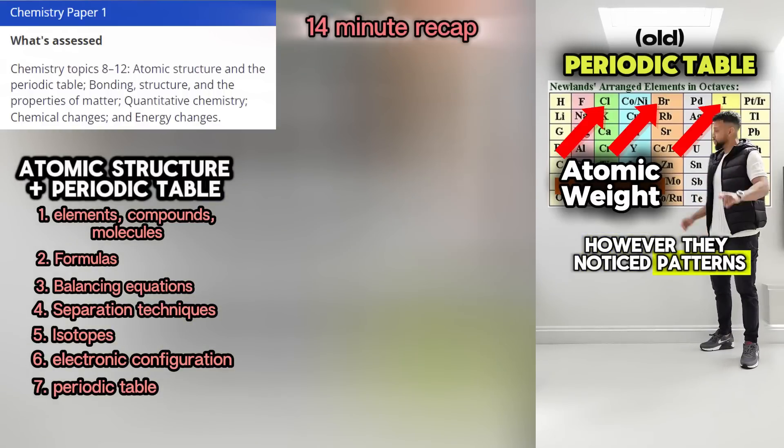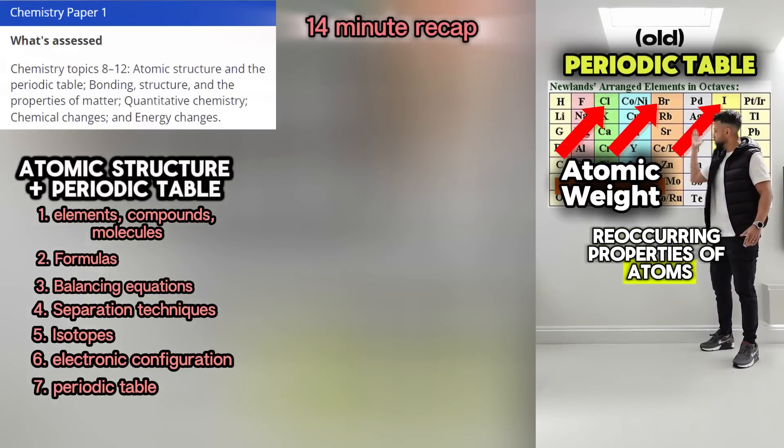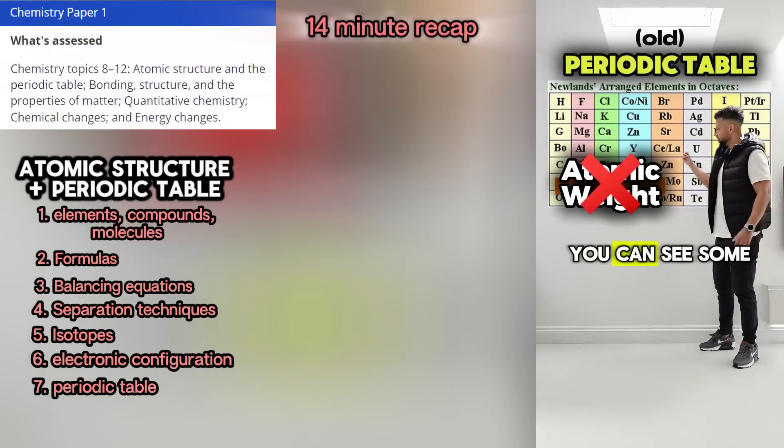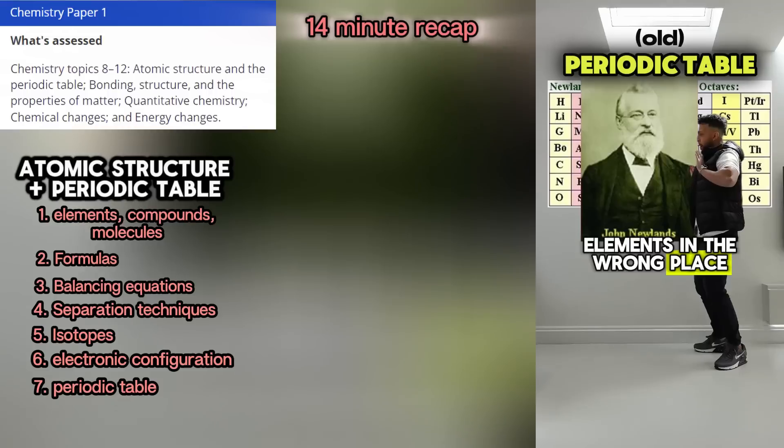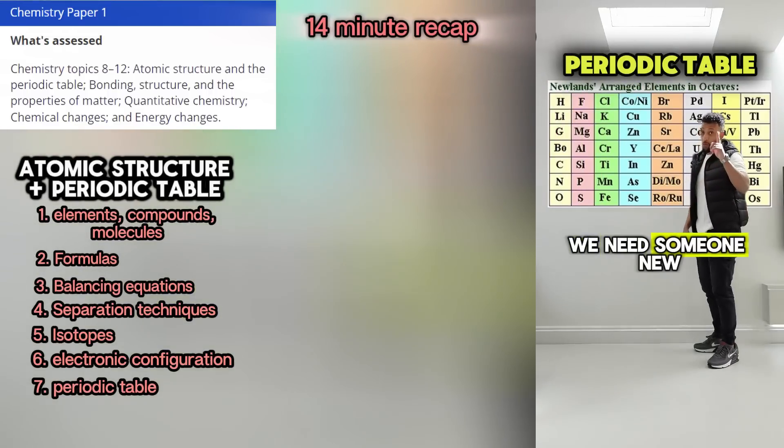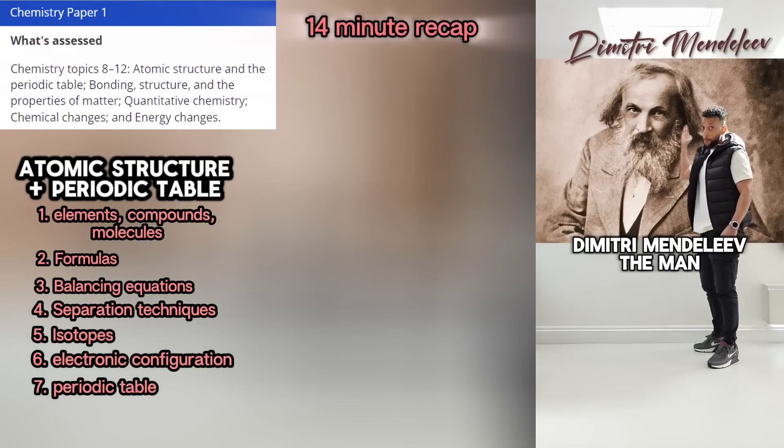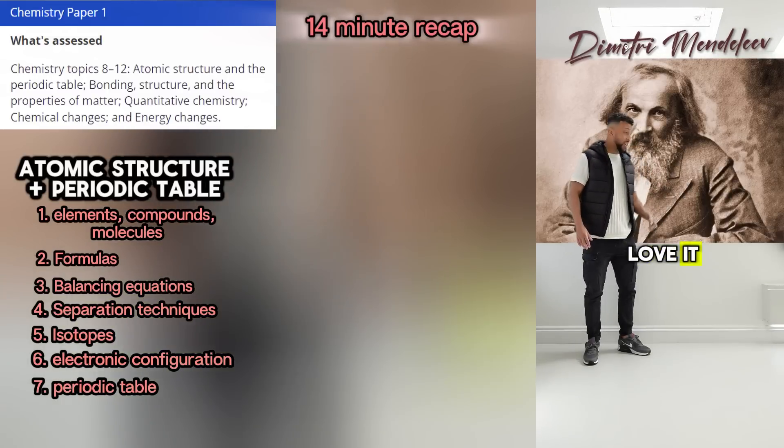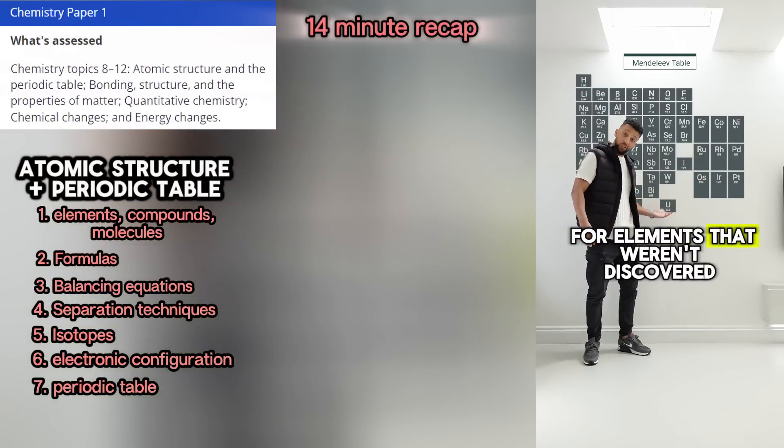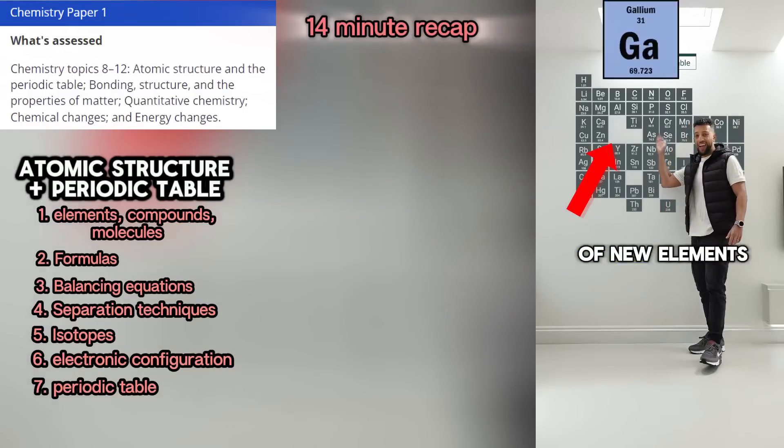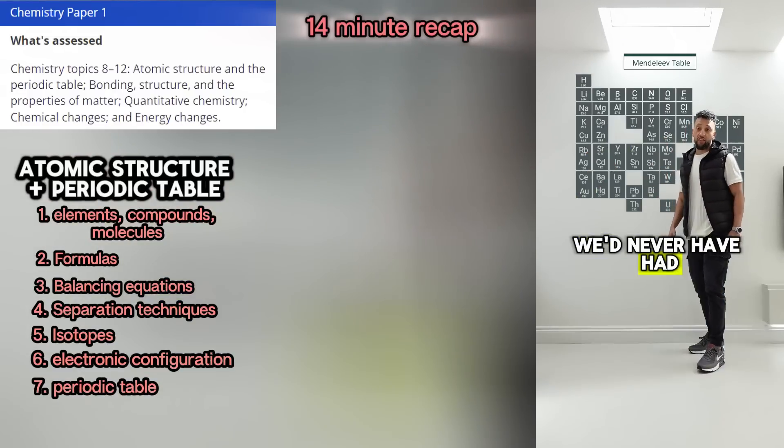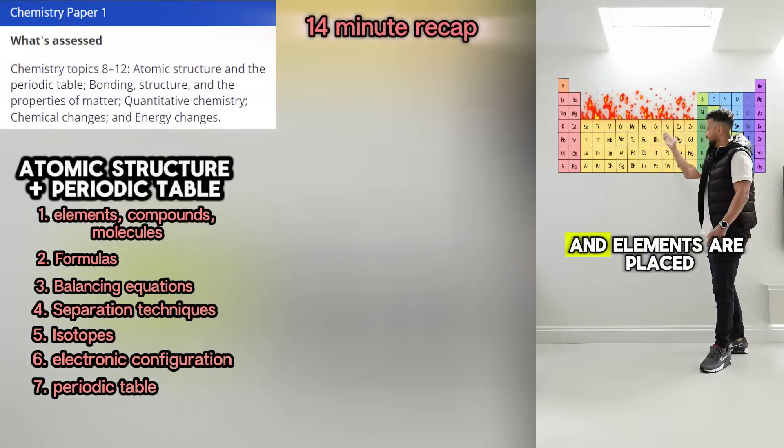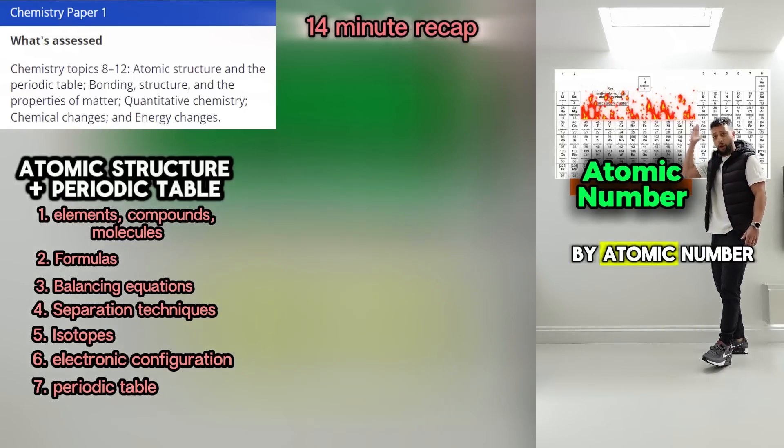However they noticed patterns, reoccurring properties of atoms. Using atomic weight it worked the right way, but you can see some elements in the wrong place. Move over John, we need someone new - Dimitri Mendeleev, the man we turn to. What this man did, you have to love it. He left gaps here for elements that weren't discovered. He basically predicted properties of new elements. Without him we'd never have had this further development. The table's new layout is hotter than summer and elements are placed by atomic number.